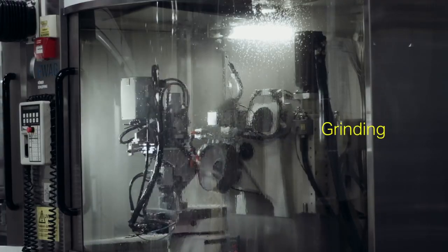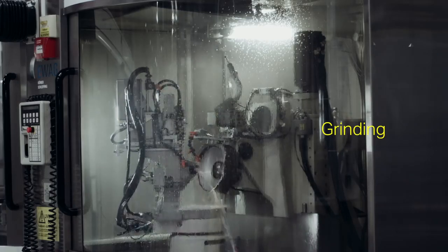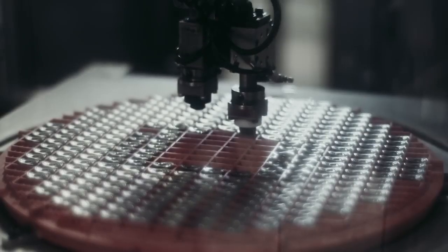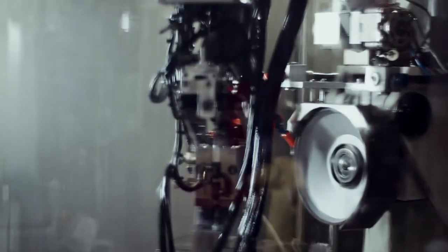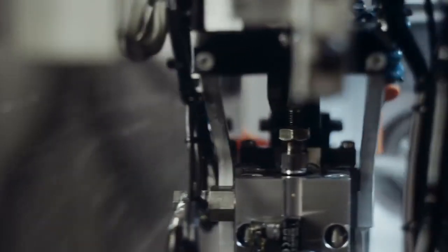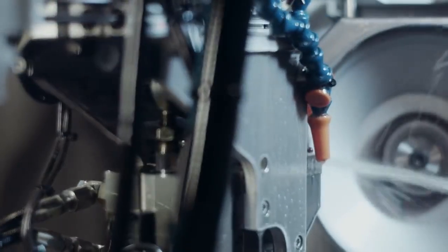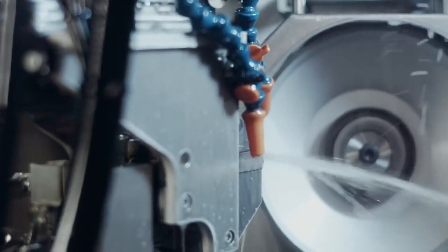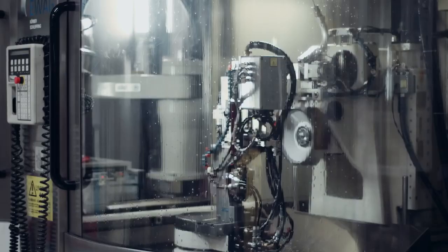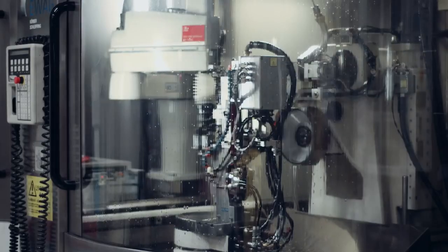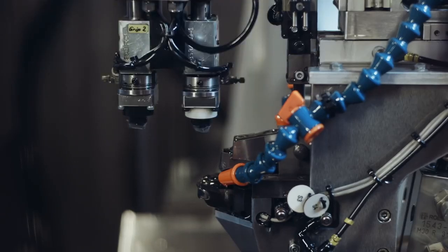The inserts are ground one by one in different types of grinding machines to achieve the exact size, geometry, and tolerances. As the cemented carbide insert is so hard, a disc with 150 million small industrial diamonds is used to grind it. The excess carbide is recycled as well as the oil that is used as cutting fluid.